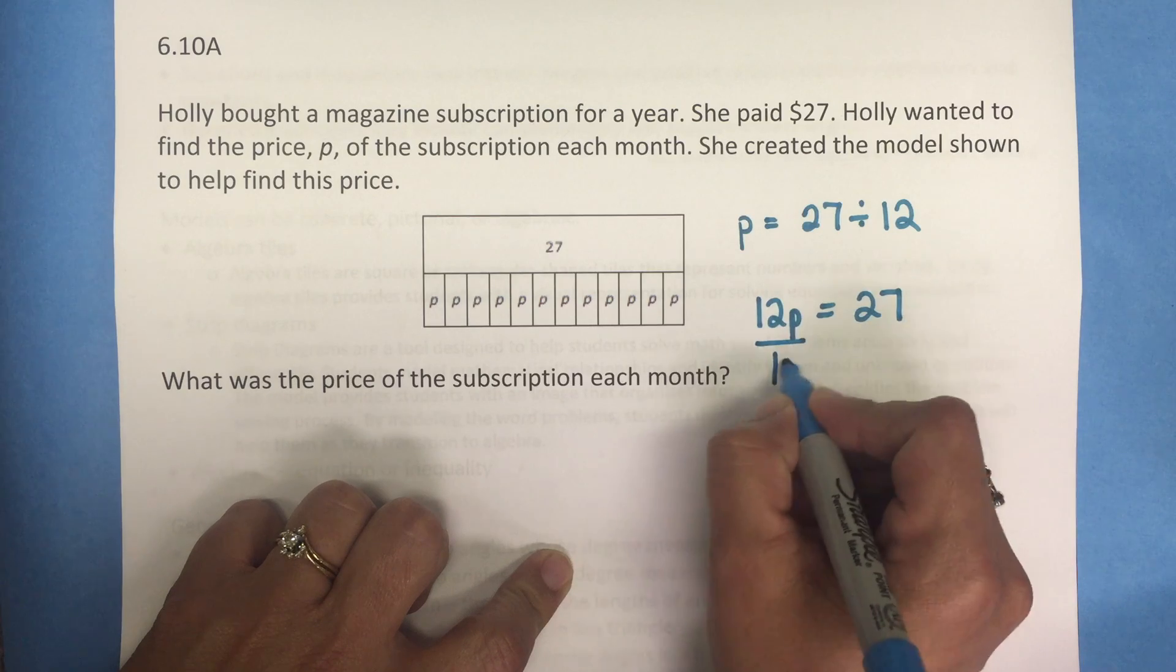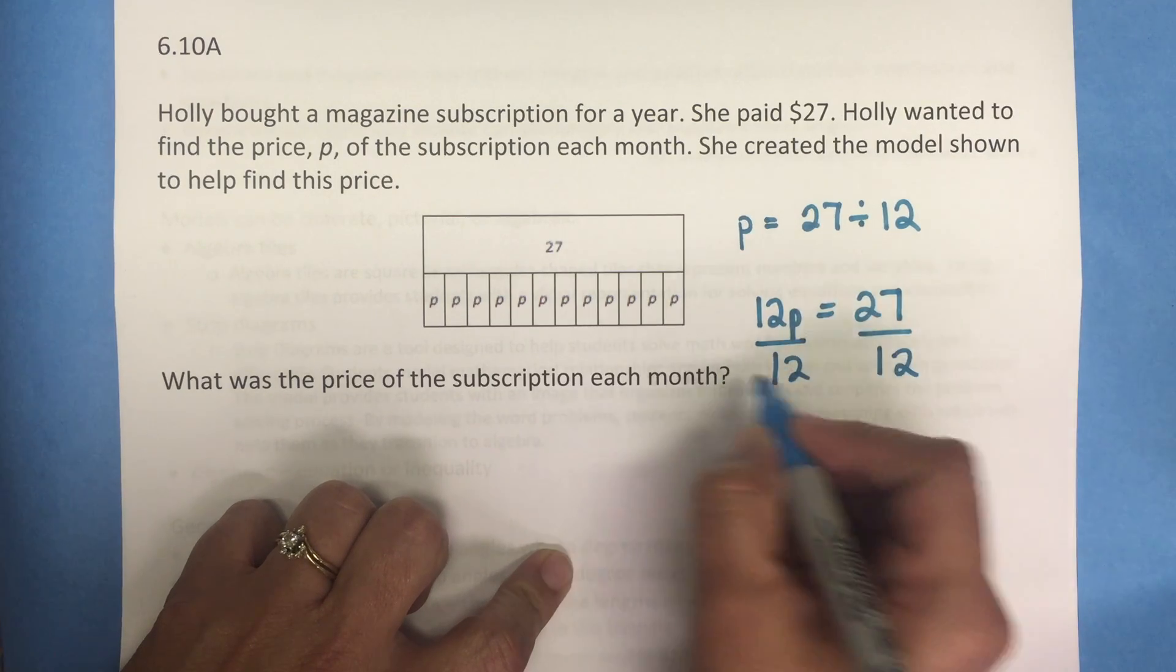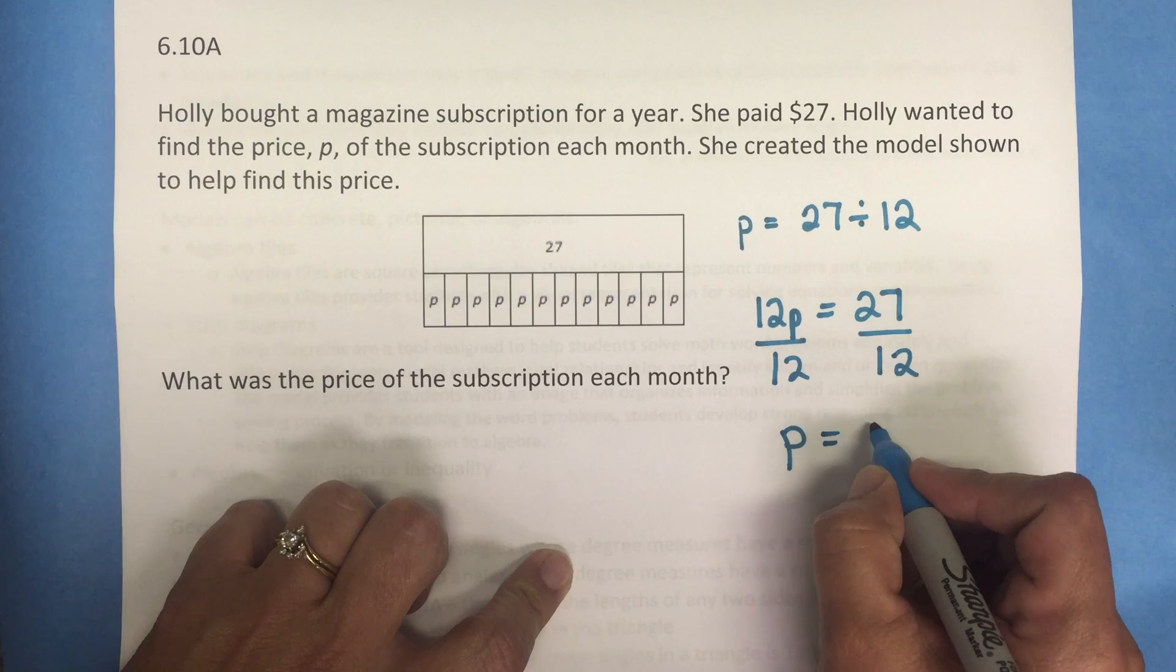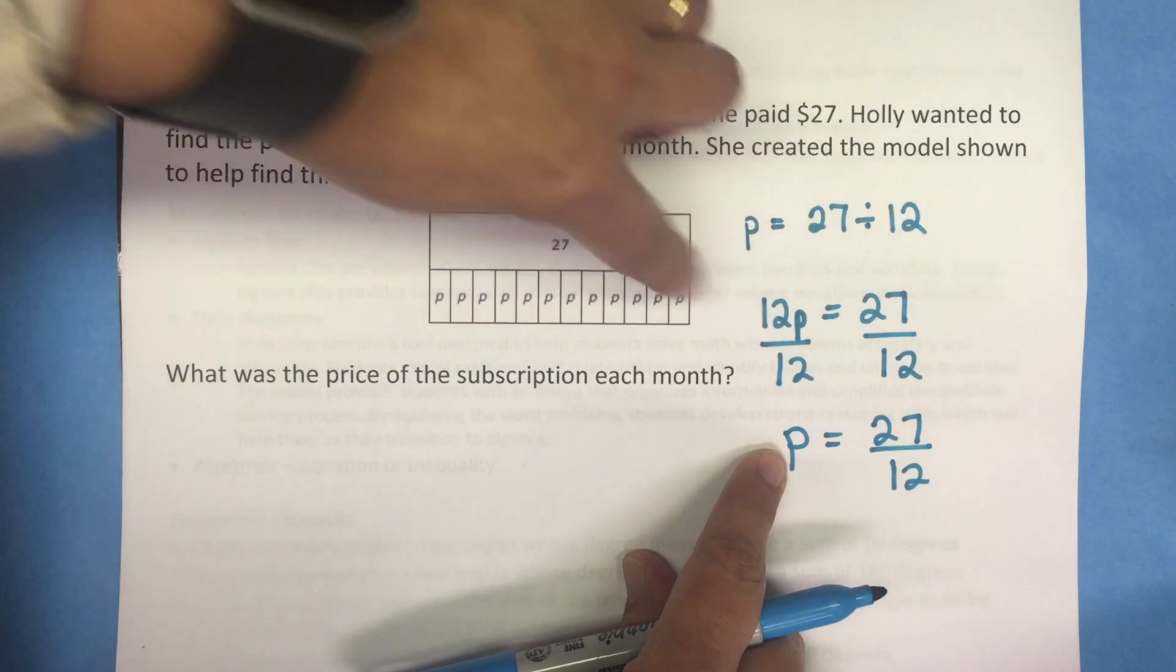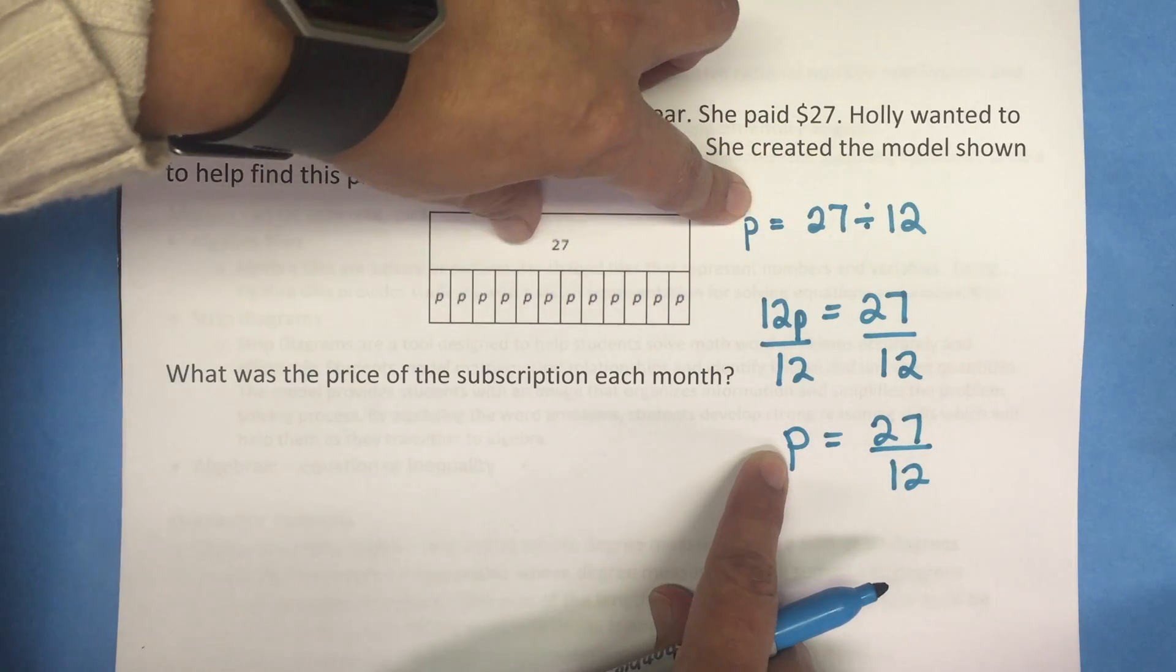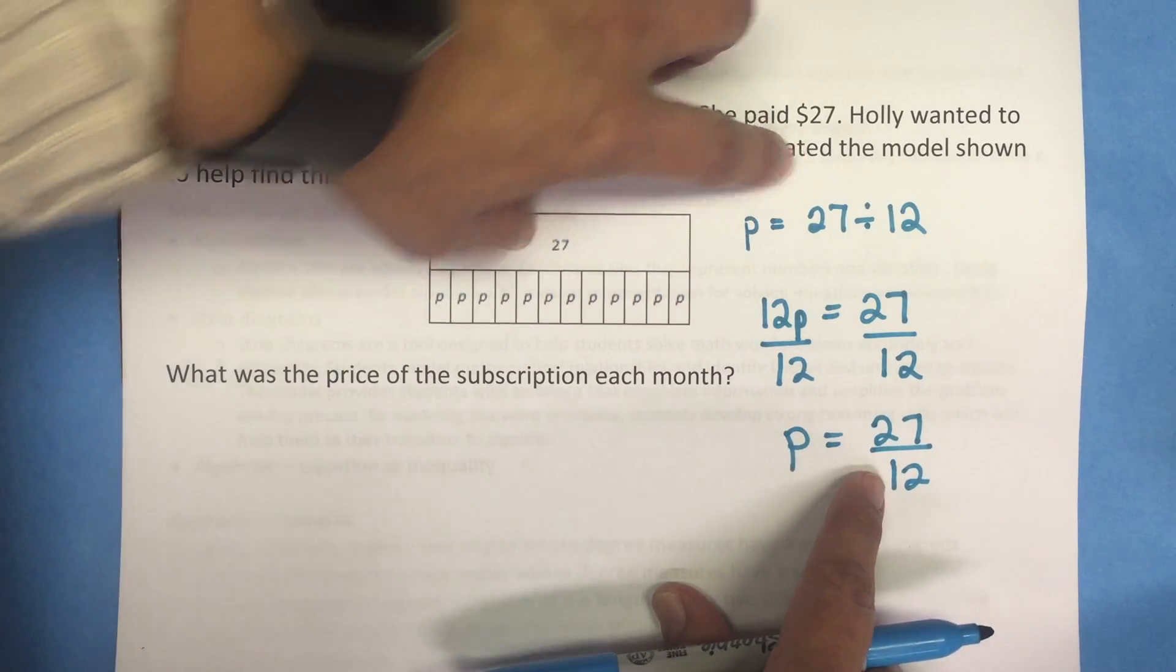Which would give P equals 27 divided by 12. So either way the students set up the equation, they're still going to have to do the same process of dividing 27 by 12.